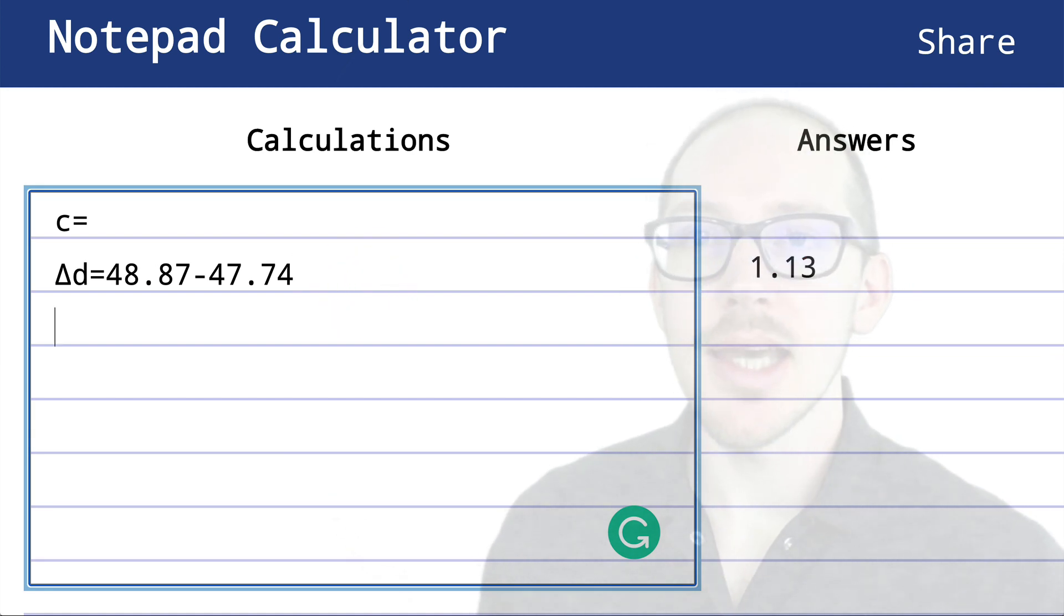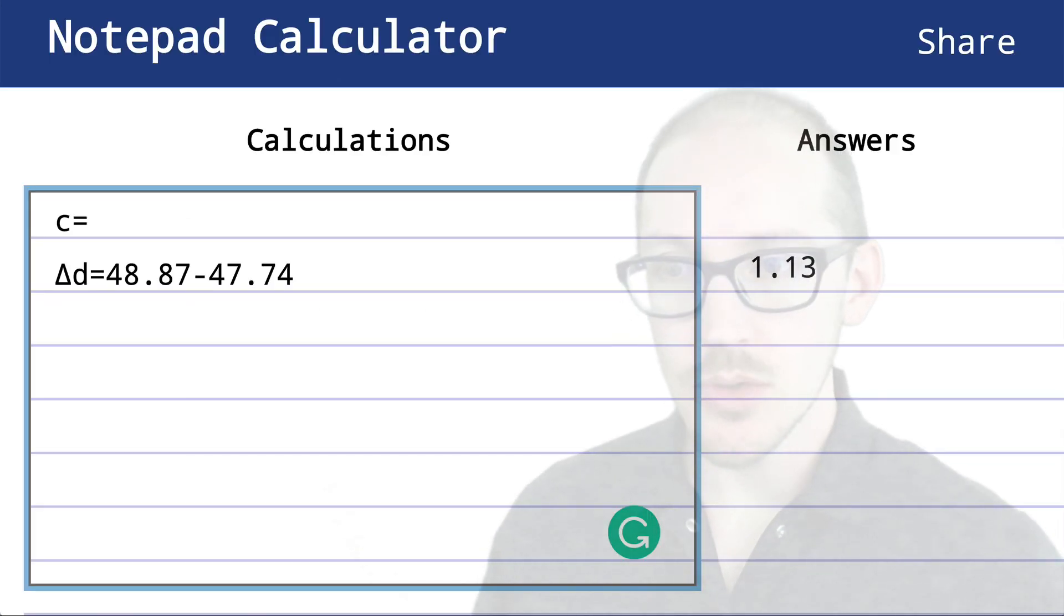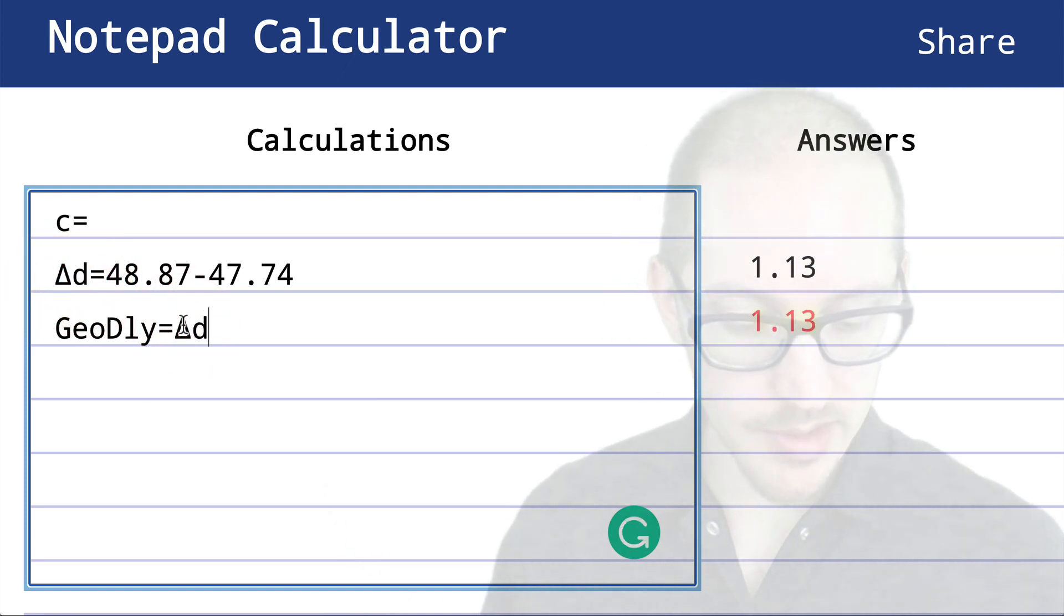Now, in this guide it tells us we can get the geometric delay by dividing the path difference by the sound velocity. So let's do that. We'll call this our geo-delay. We need our difference in distance, so delta D, and we're going to divide that by the speed of sound. Let's call the speed of sound 11.30, and this gives us seconds, so let's multiply that by 1,000 to get milliseconds.